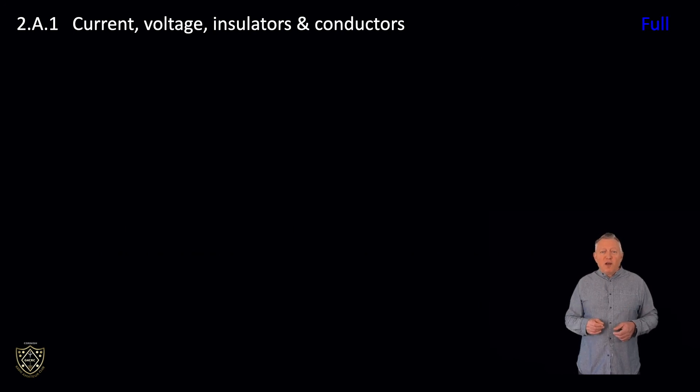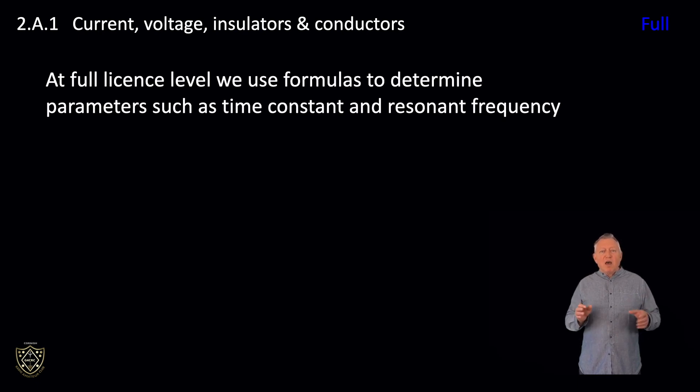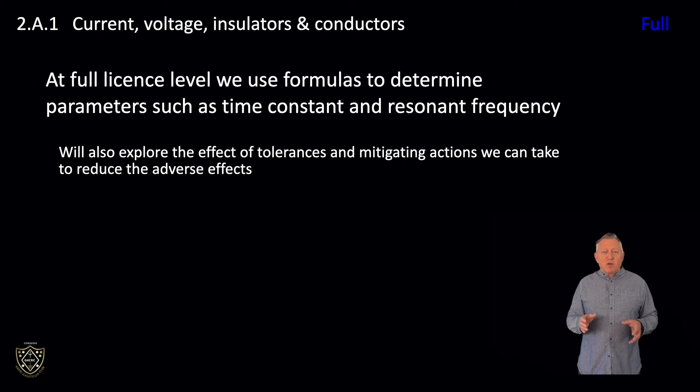Moving on to full license level. At full license level, we use formulas to determine parameters such as time constant and resonant frequency. As we work through those formulas, we will also explore the effect of tolerances and mitigating actions that we can take to reduce the adverse effects. Later, as we use physical quantities to perform calculations at full level, we will examine the effect of component tolerances on the expected result.